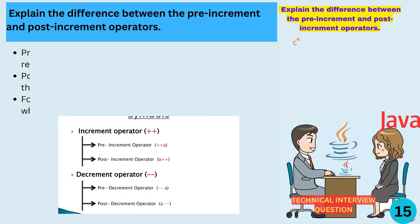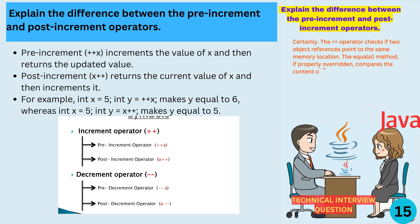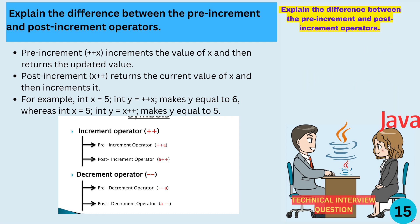Explain the difference between the pre-increment and post-increment operators. Pre-increment (++x) increments the value of x and then returns the updated value. Post-increment (x++) returns the current value of x and then increments it. For example, int x = 5, int y = ++x makes y equal to 6, whereas int x = 5, int y = x++ makes y equal to 5.